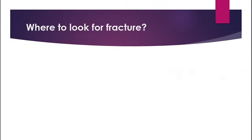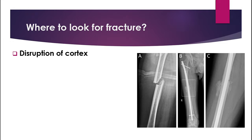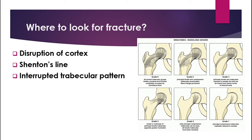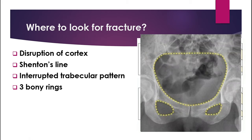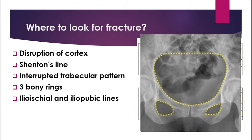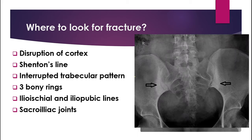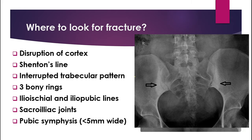For pelvic x-ray, there are some ways and areas to look at to identify fractures. First, look at the disruption of cortex. Second, look at the breaks of Shenton's line. Third, visualize the interrupted trabecular pattern — it's normal to have six trabecular patterns, and when these lines are disrupted, that's when you suspect a fracture. You can also look at the three bony rings: the main pelvic ring and the two smaller obturator rings formed by the pubic rami. Additionally, look at the ilioischial and iliopubic lines, the sacroiliac joints for ankylosing spondylitis or fracture, and finally the pubic symphysis, which normally should be less than 5mm wide.